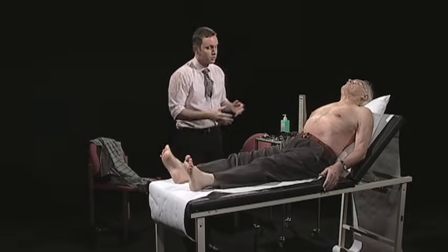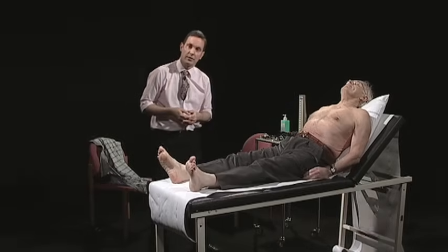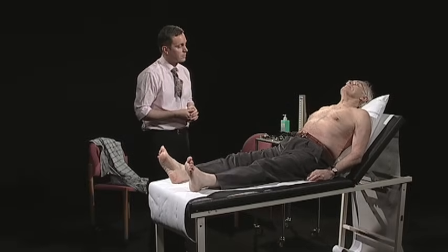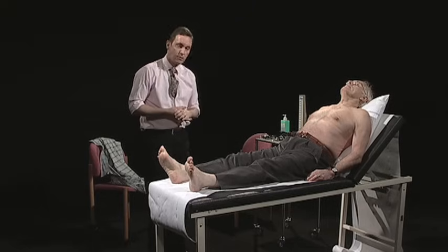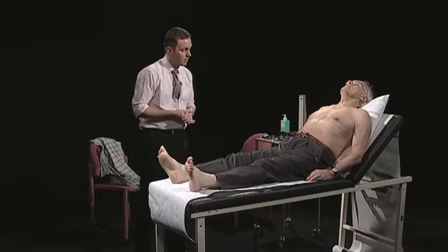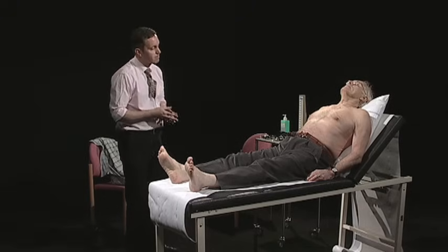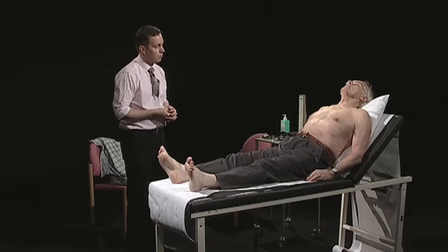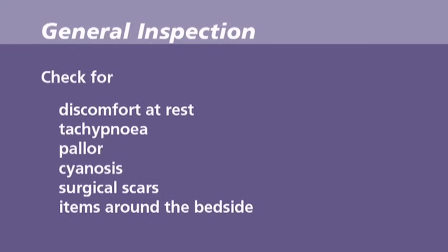As Mr Jackson is getting onto the couch I'm looking for any signs of discomfort. I'm looking to see any ease of movement and whether he's breathless. I then stand back and have a look at the patient as a whole. I'm checking for any obvious abnormalities such as discomfort at rest, tachypnoea, pallor, cyanosis, scars or items of note around the bedside such as intravenous infusions that might be present on a ward.